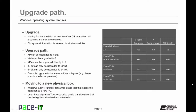Let's talk about the upgrade path. An upgrade moves from one edition or version of an operating system to another, and all programs and files are retained. The old system information is kept in a file called Windows.old. XP can be upgraded to Vista; Vista can be upgraded to 7, but XP cannot be upgraded directly to Windows 7. If you're running 32-bit, you can only upgrade to 32-bit; 64-bit to 64-bit. You can only upgrade to the same version or higher — so from Home Premium you can go Home Premium and higher, but from Ultimate you must go Ultimate.